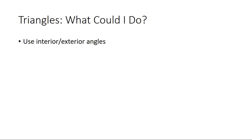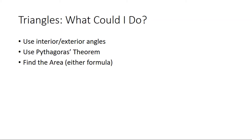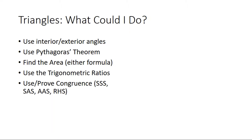We could use the facts about interior and exterior angles — the interior angles add up to 180 degrees, and the exterior angles add up to 360 degrees. We could use Pythagoras's theorem: a² + b² = c², where we have a right angle triangle and c is the hypotenuse. We could use one of our area formulae: half base times height, or half ab sine C. We could use the trigonometric ratios — SOHCAHTOA. We could use the congruence rules: SSS, SAS, AAS, or RHS. And we could use the sine rule or the cosine rule.